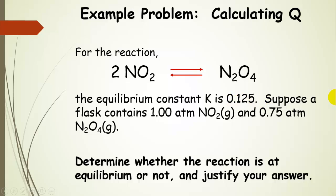Now, we are given some reaction conditions. So we have one atmosphere of nitrogen dioxide and 0.75 atmospheres of dinitrogen tetraoxide. Now, we want to figure out whether this reaction is at equilibrium or not. And then we're going to justify our answer.